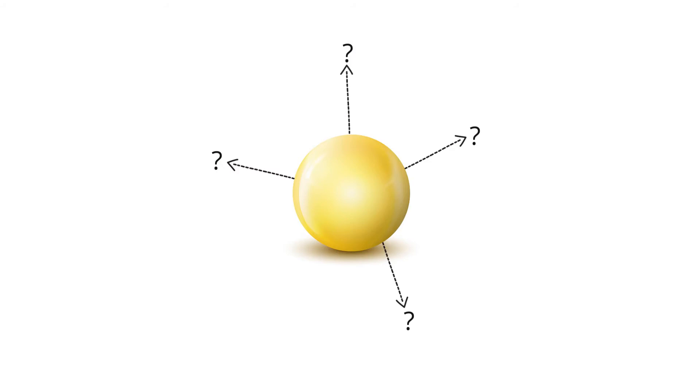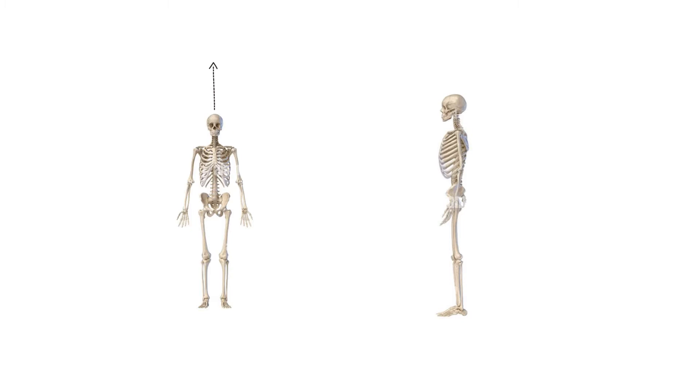The human body is not a sphere with no defined axes. Rather, we have clear, distinct sections of our body. The top of our body, or anterior, is very different when compared to the bottom, or posterior. And we have a clearly defined axis that shows our front, or ventral side, versus our back, or dorsal side. But how do these axes form?